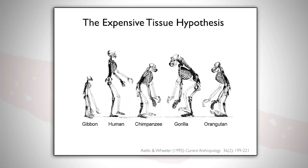Here are a bunch of primates — you can see the same thing in each of them. They've got the makings of big bellies, and the human has kind of got a waistline.